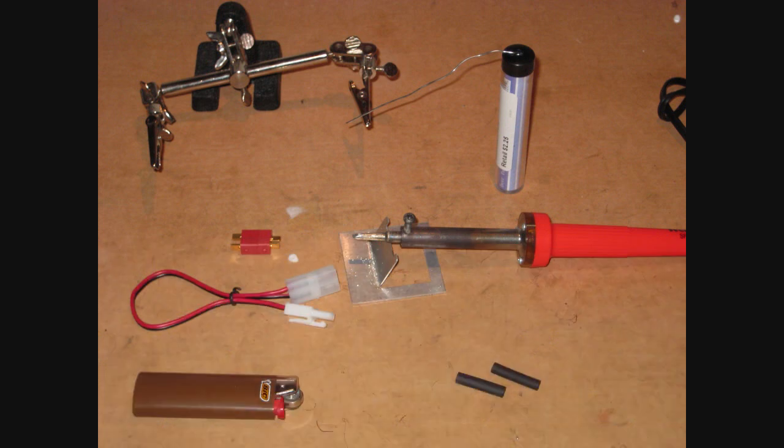Some of the things you're going to need for this project are a Deans plug, a battery or connector cable, some shrink wrap, a soldering iron, some solder, and a lighter or a heat gun.